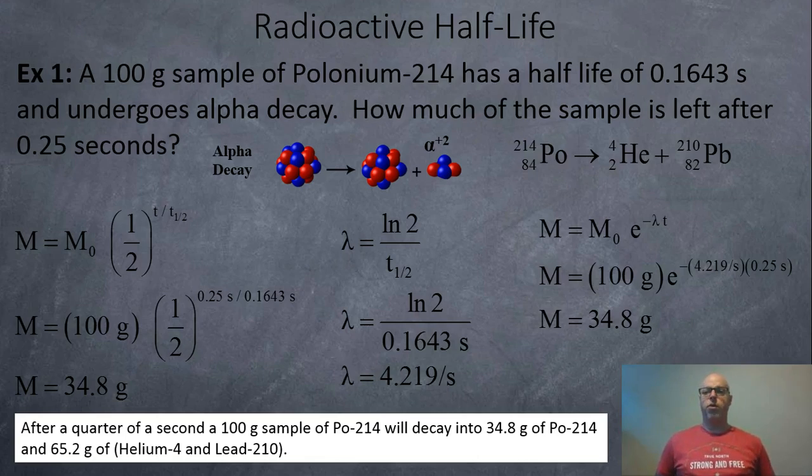Okay, so let's just take a look at a few examples. You have a 100 gram sample of polonium-214, very dangerous radioactive substance with a half-life of 0.1643 seconds and it undergoes alpha decay. How much of it is left after 0.25 seconds?